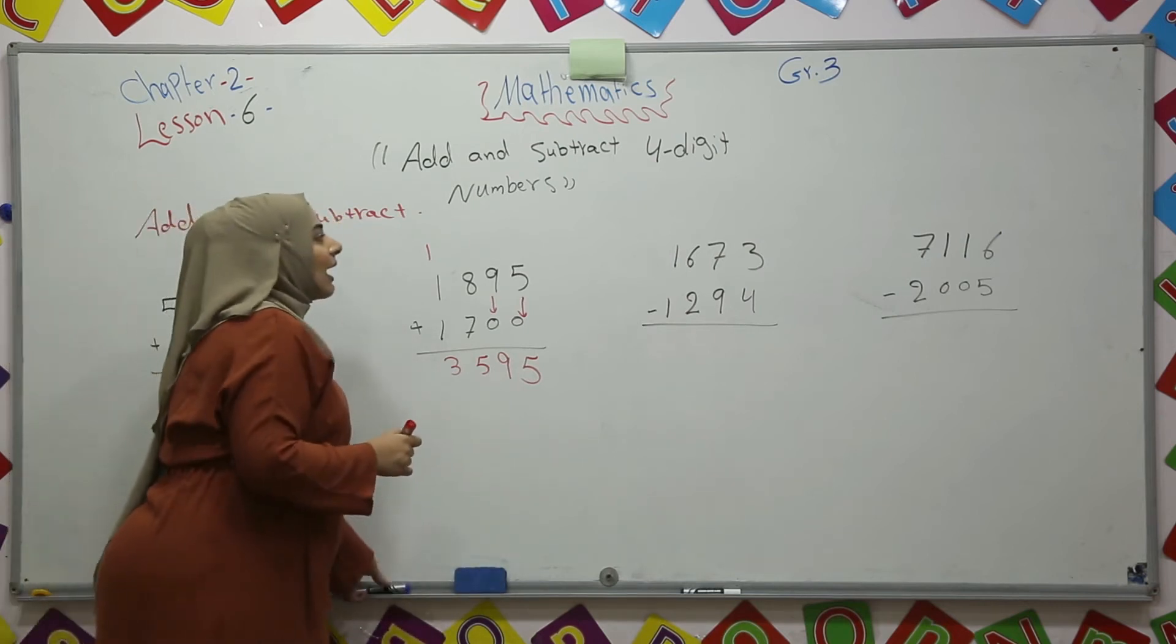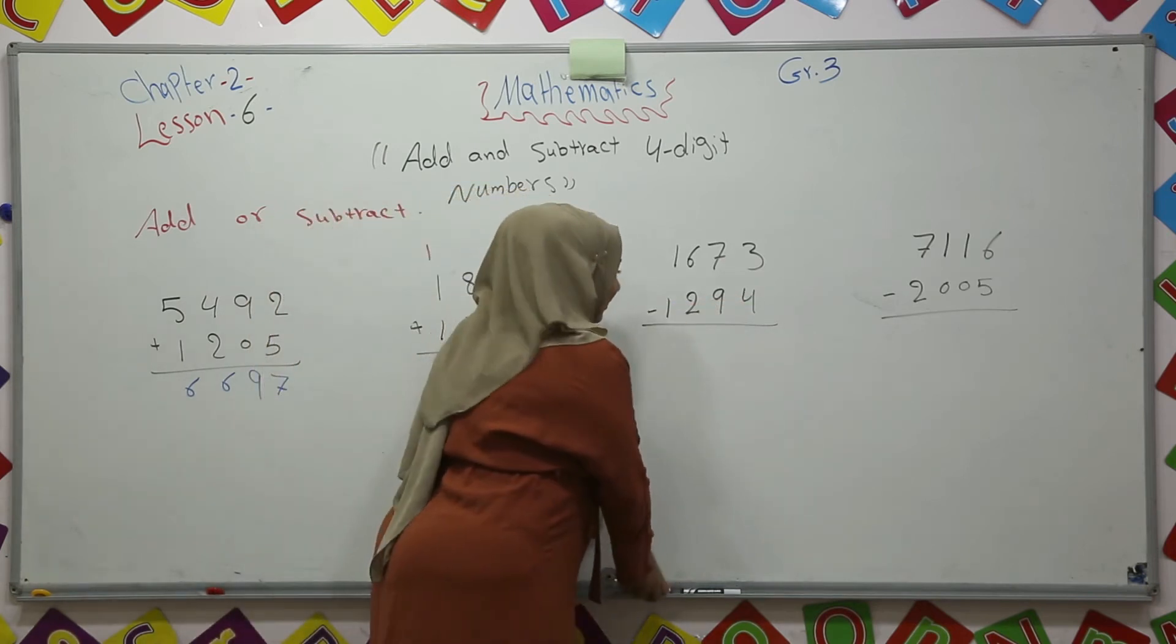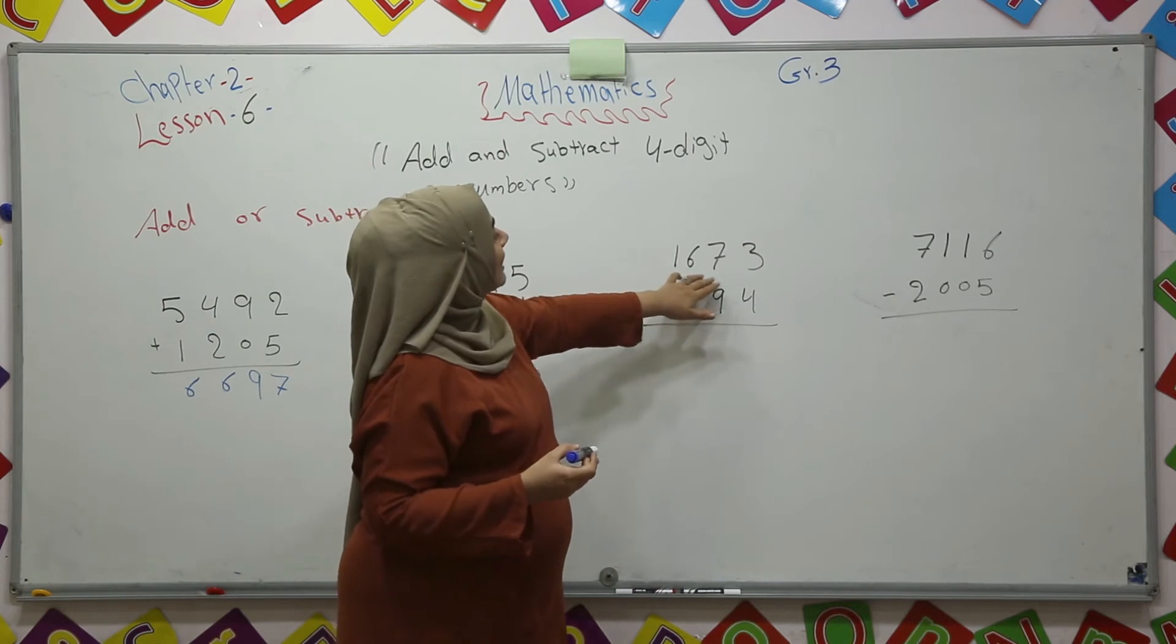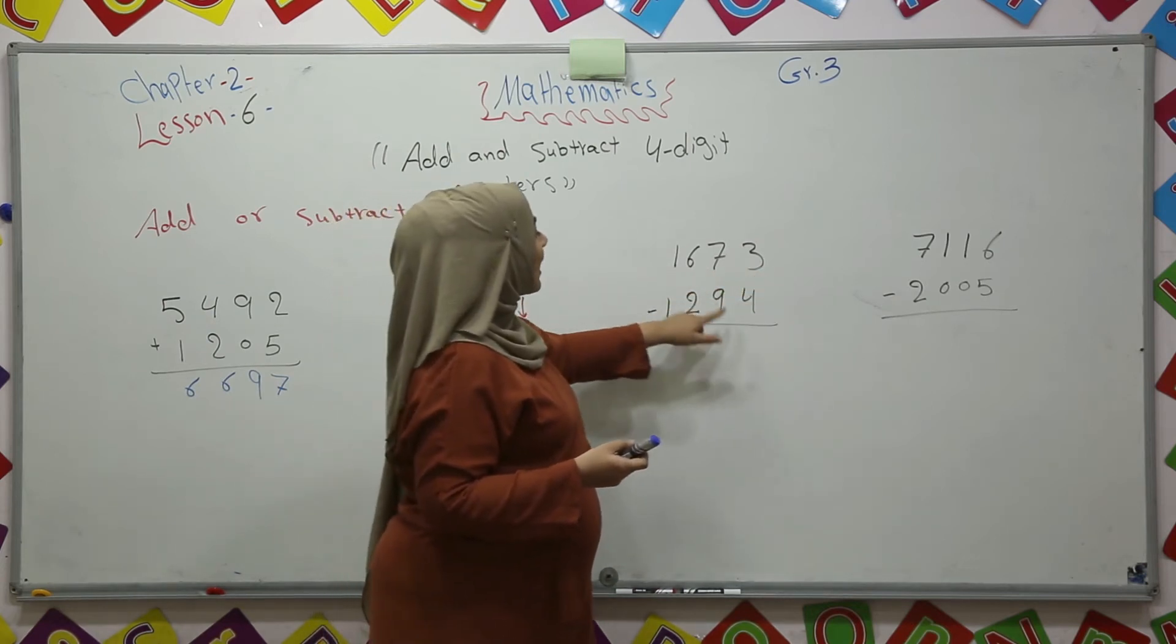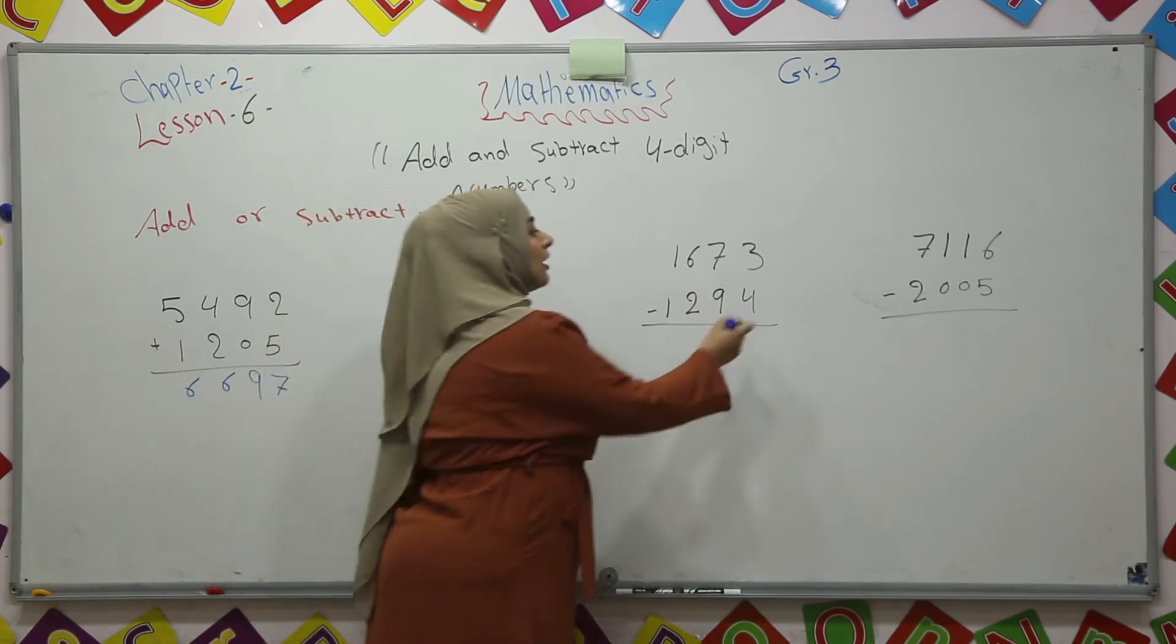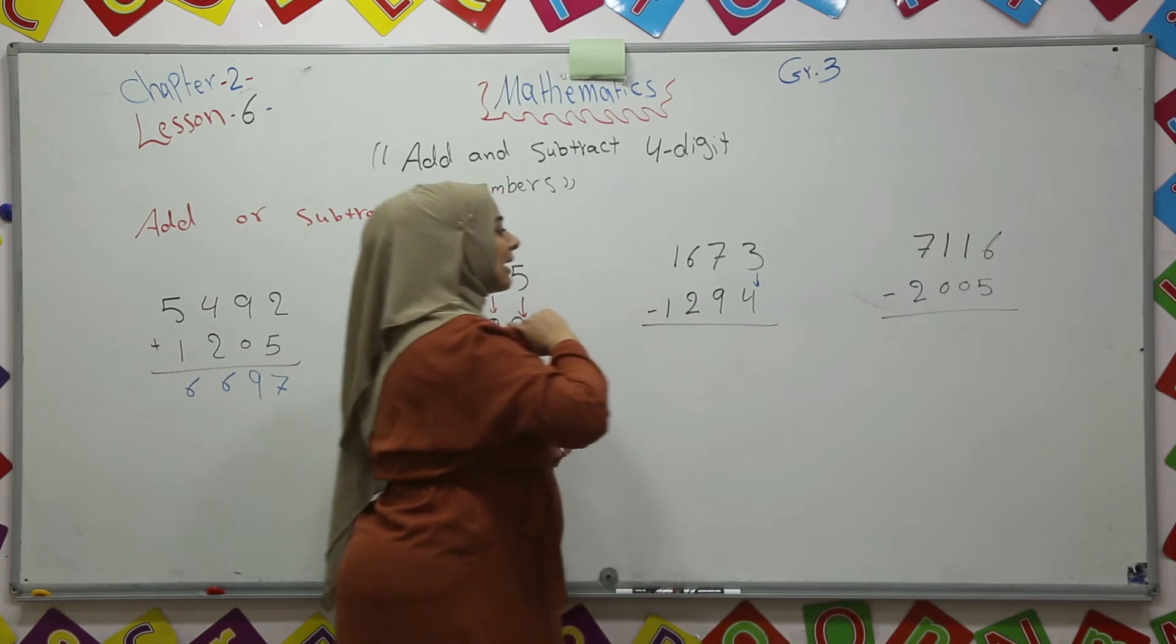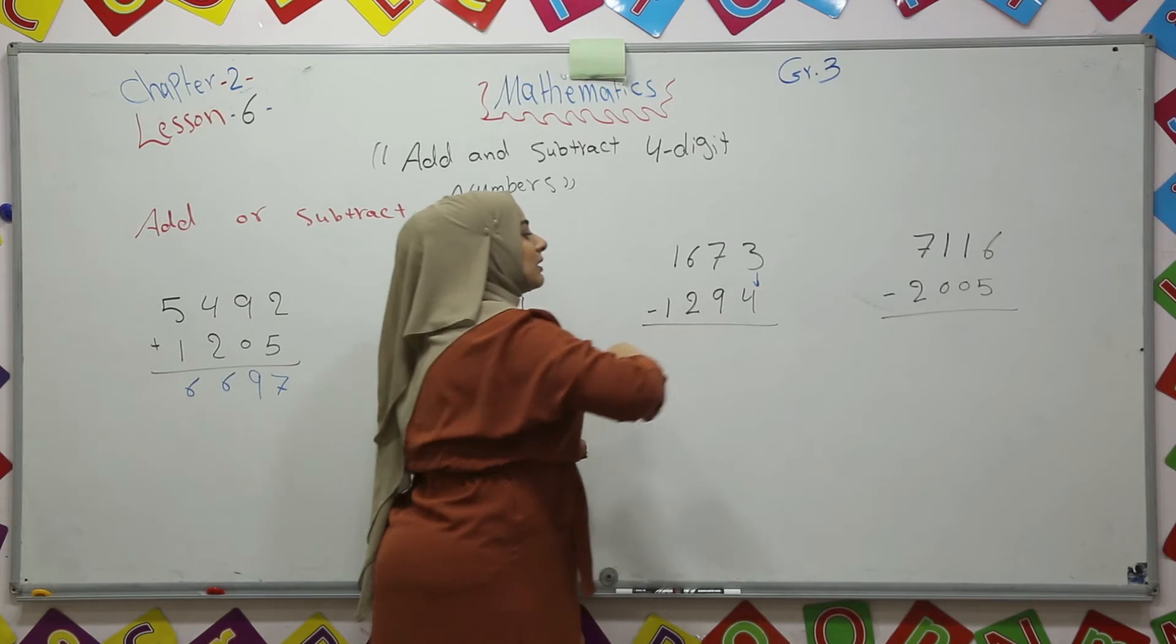Now we have subtracted four digit numbers. 1,673 minus 1,294. Again, we should start from where? We should start from ones place. 3 minus 4.